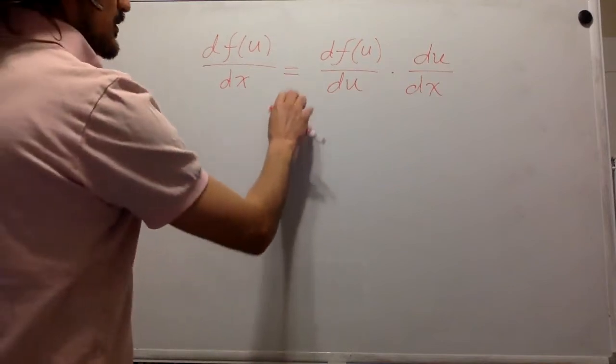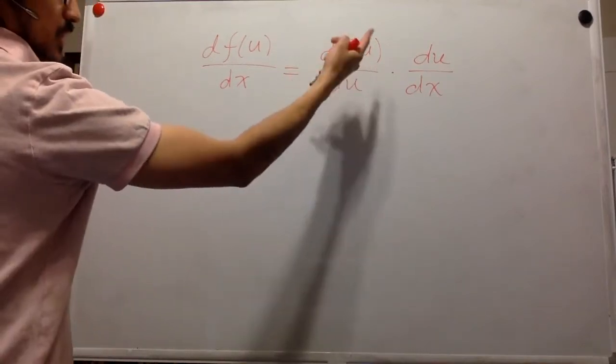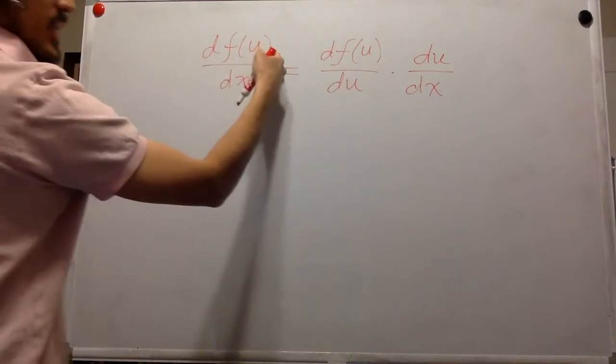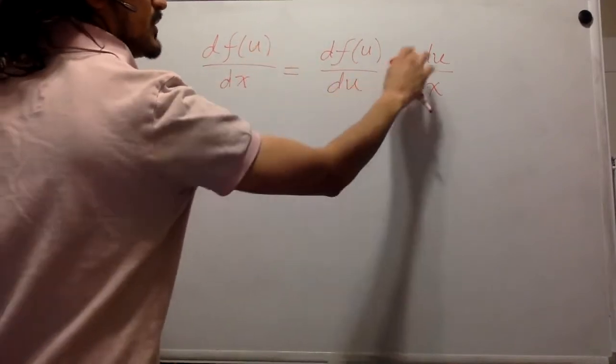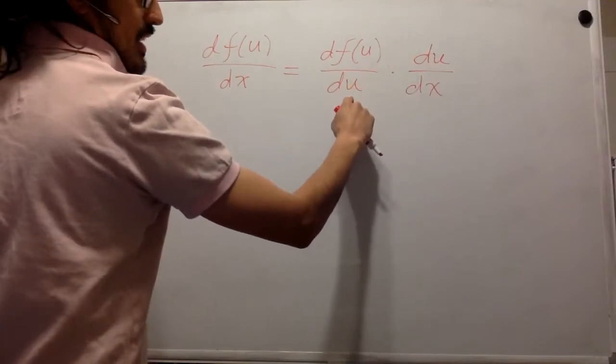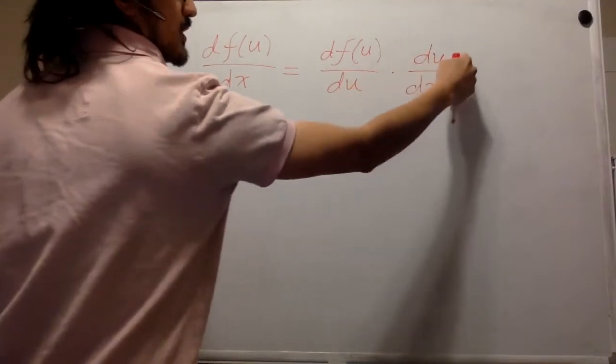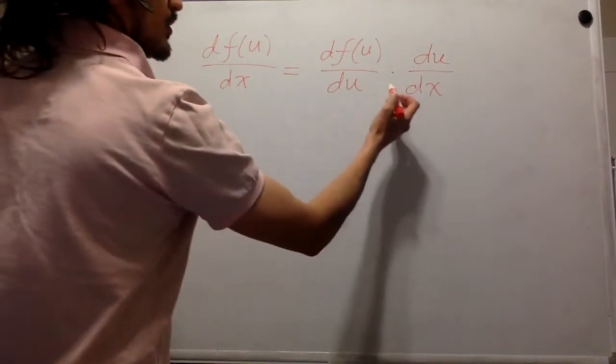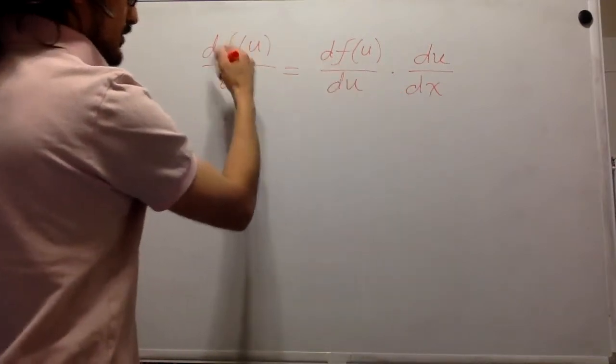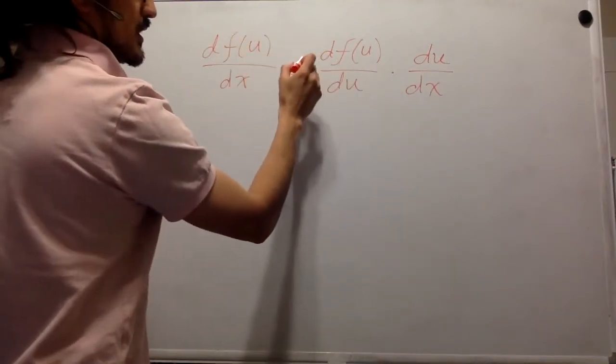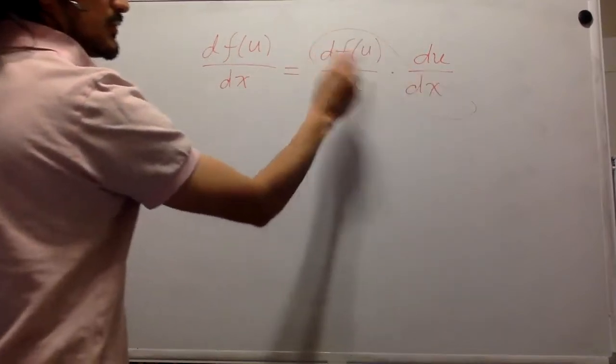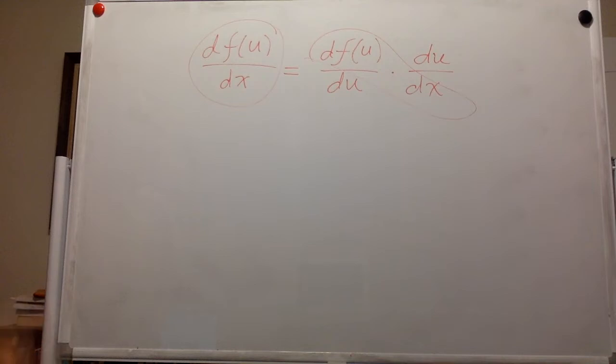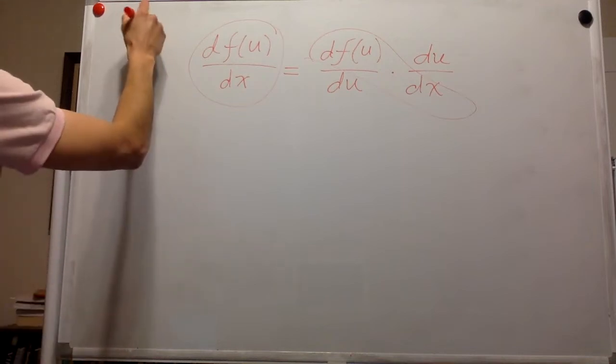So this numerator is going to have the same units as this one. And this du might have different units, but because you're multiplying it with a du over here, those units are going to cancel out. So the units of these derivatives are going to be these ones, which are the same as over here. So that's it, that's part A.